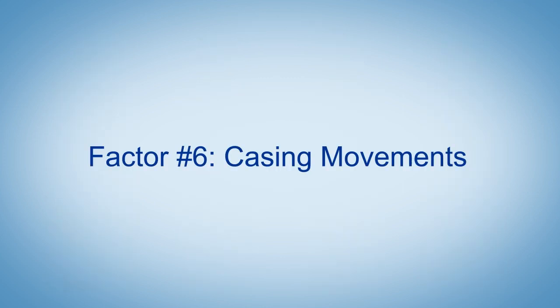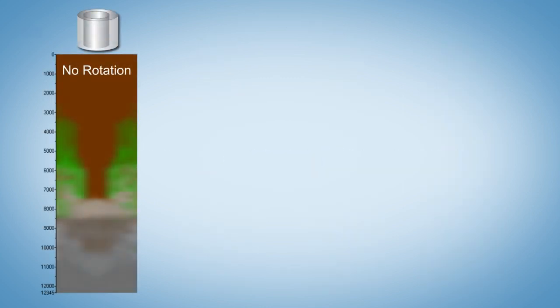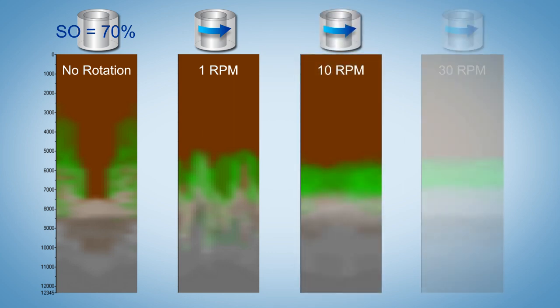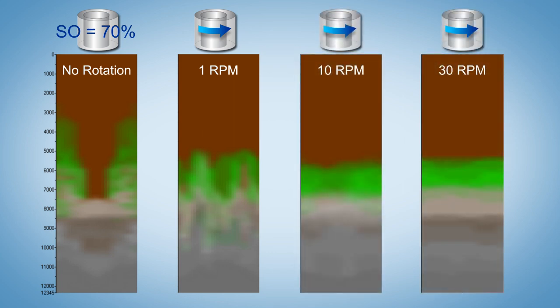Casing movements improve the quality of the cement job. At a standoff of 70%, a slight rotation of 1 RPM already greatly clears the mud channel. Increasing the RPM to 10 or 30 RPM further improves the displacement.